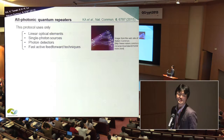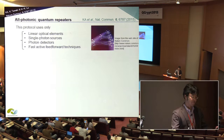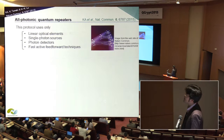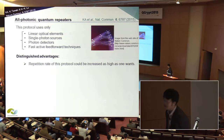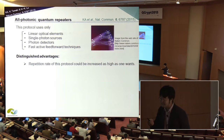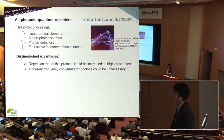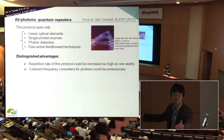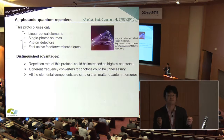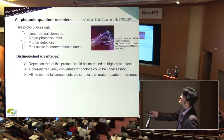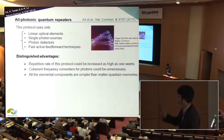Our protocol looks like this: each repeater node first prepares entangled photons sent to the adjacent repeater node. Thanks to excluding the necessity of matter quantum memory, our protocol has distinguished advantages. The first advantage is the repetition rate of our protocol could be increased as high as one wants, because we just use optical devices. In addition, we do not need to use coherent frequency converters for photons to strengthen coupling with matter quantum memory and with optical fiber, because our protocol can work using only telecom wavelength single photons. All the optical components described here are much simpler than matter quantum memory.